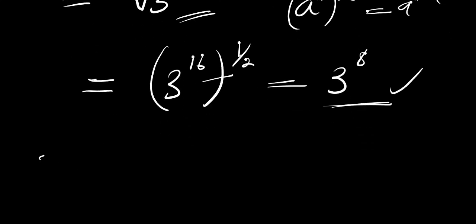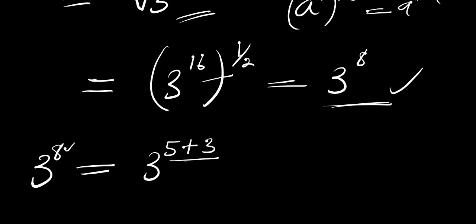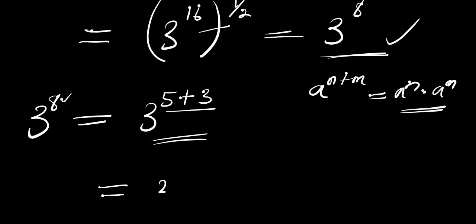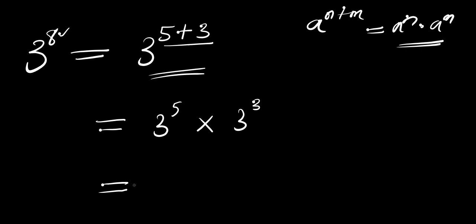Now what is the value of 3^8? We can write it as 3^(5+3), since 5 plus 3 is 8. Applying the identity a^(n+m) = a^n × a^m, we get 3^5 times 3^3. Now 3^5 means 3 in 5 places, which equals 243, and 3^3 equals 27. So we have 243 times 27.